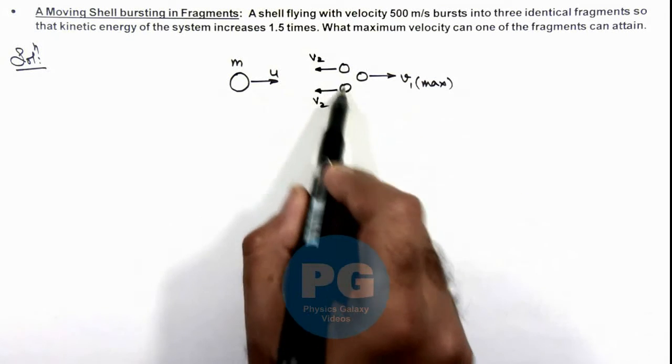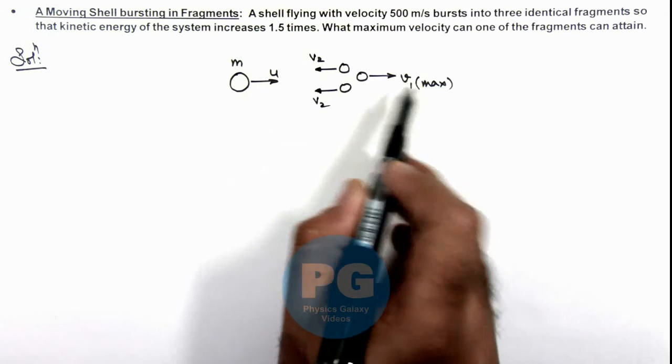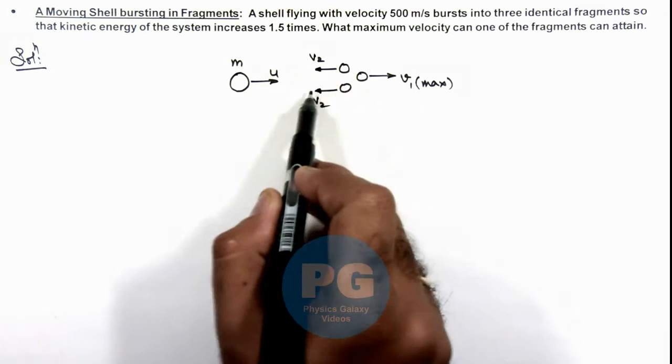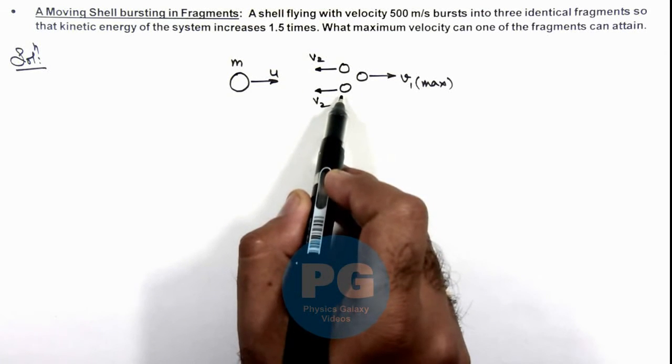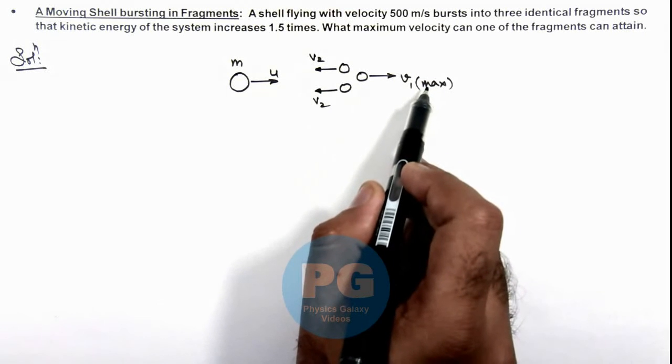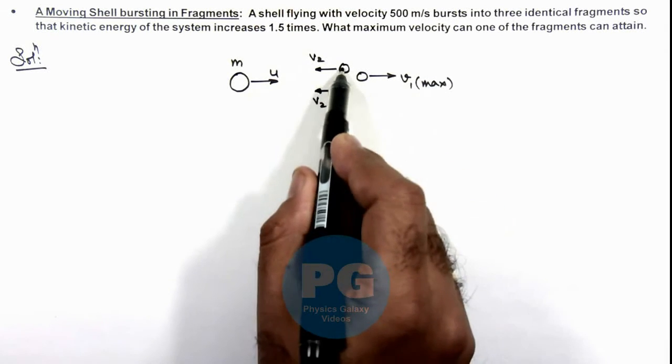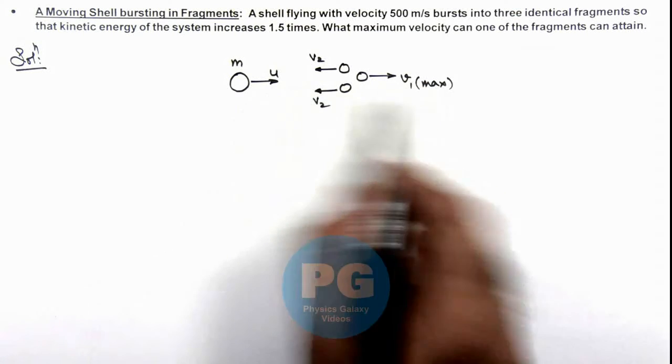As if these two are considered to be moving at some angle, this velocity will be less than maximum because only a component of these two parts along the direction of motion will be responsible for its velocity. But if these two fragments are moving opposite to motion, this will gain a maximum velocity to conserve momentum.